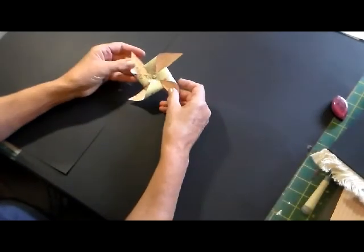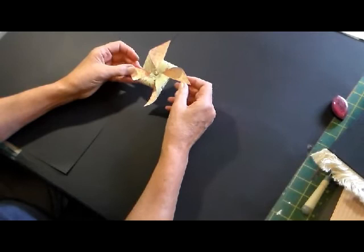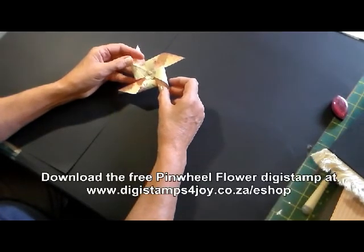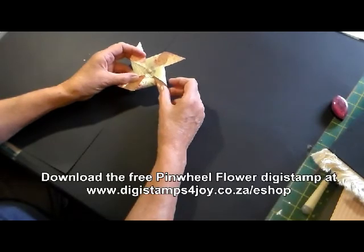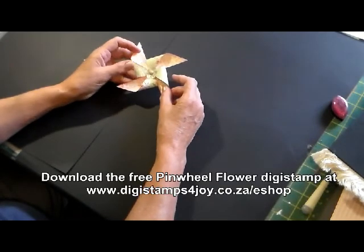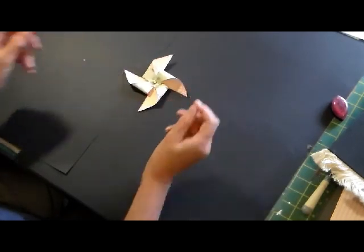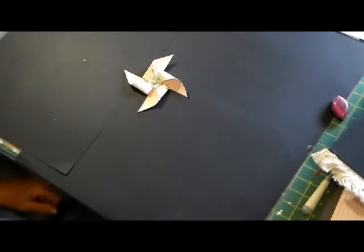And there you have your flower! Very easy. Head on over to digistampsforjoy.co.za slash e-shop and go look in the freebie section and you'll see the template there. Have fun. We'll see you next time!